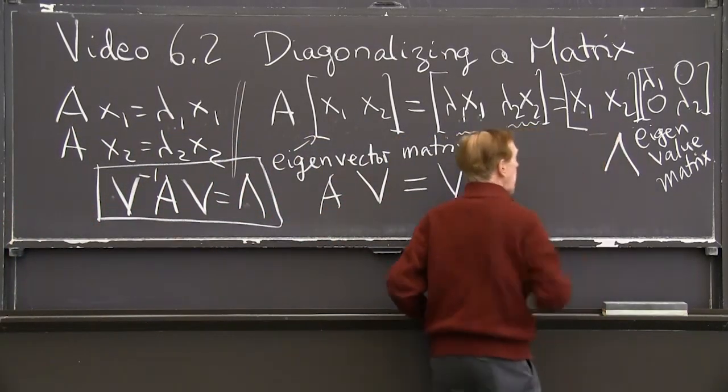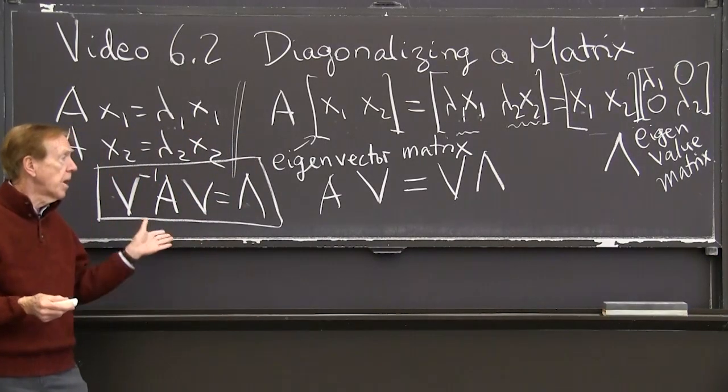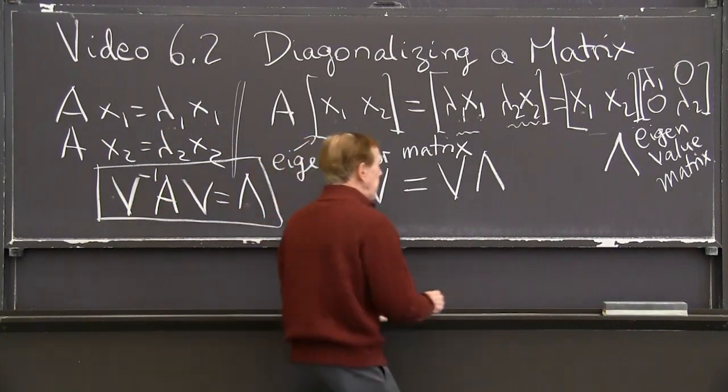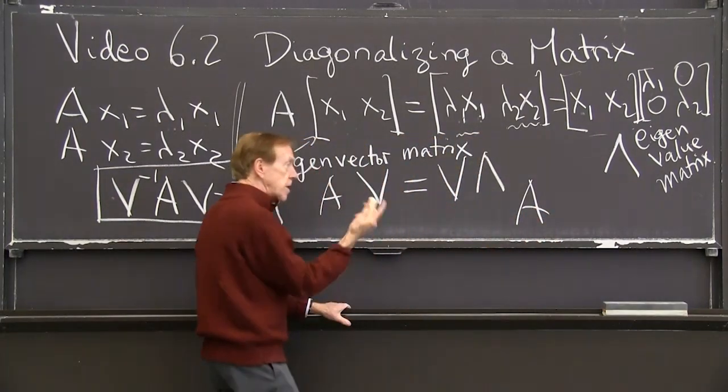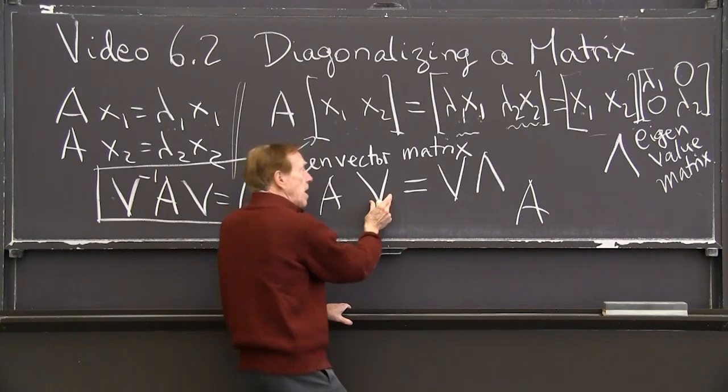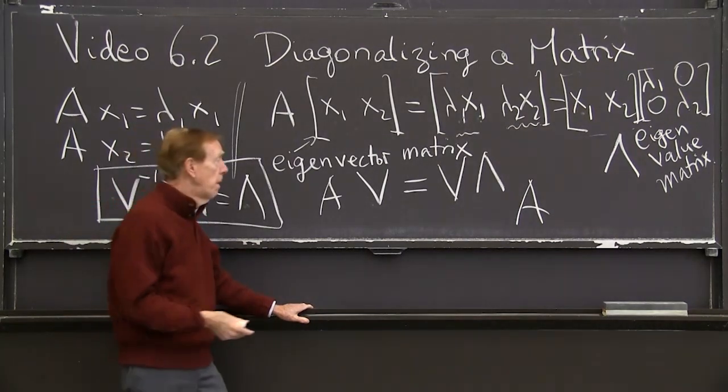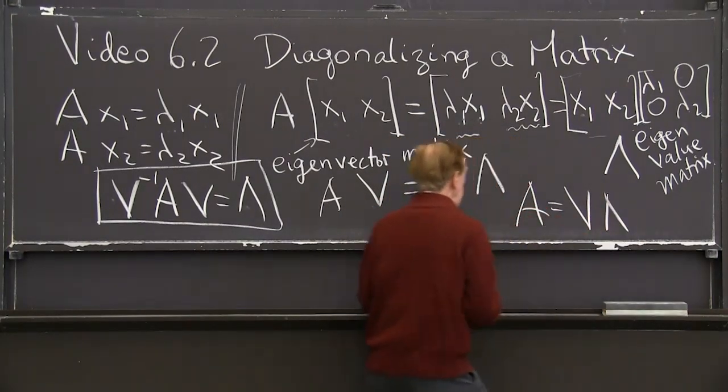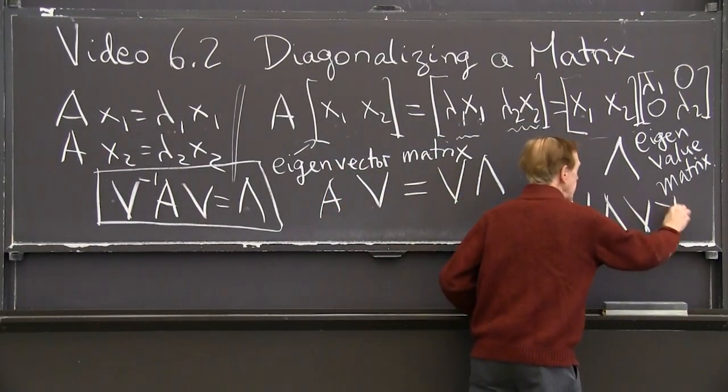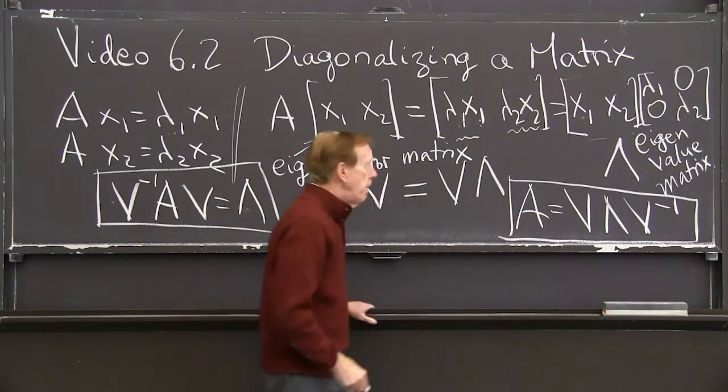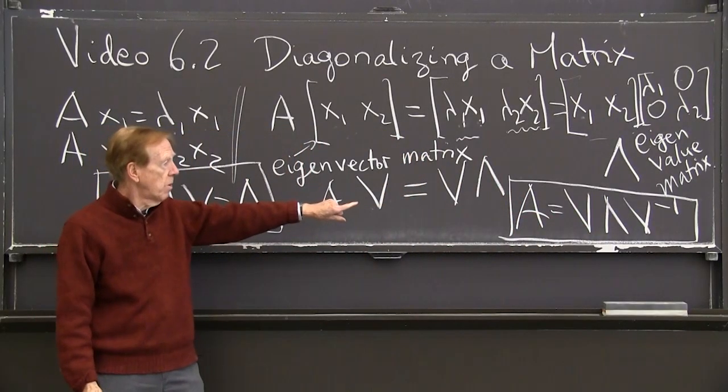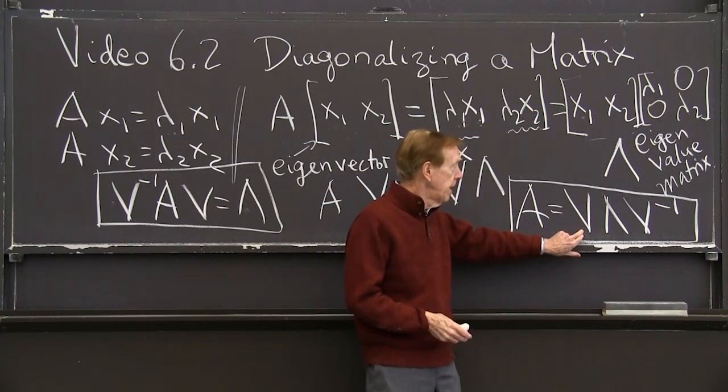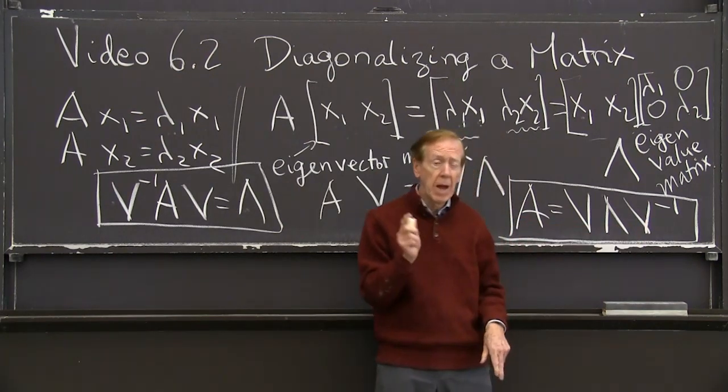Or other times, I might want to multiply both sides here by V inverse coming on the right. So that would give me A, V, V inverse is the identity. So I can move V over there as V inverse. That's what it amounts to. I multiply both sides by V inverse, so this is just A. And this is the V and the lambda, and now the V inverse. That's great. So that's a way to see what A, how A is built up or broken down into the eigenvector matrix times the eigenvalue matrix times the inverse of the eigenvector matrix.